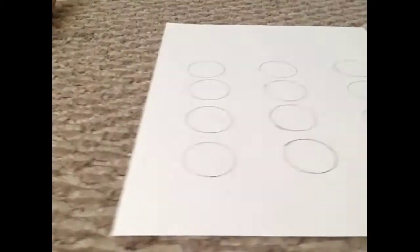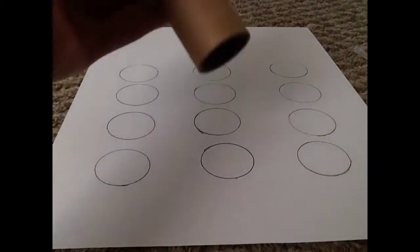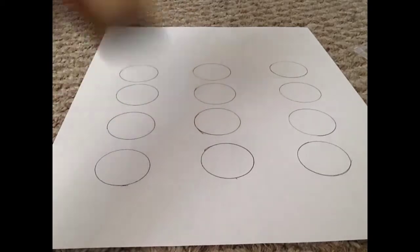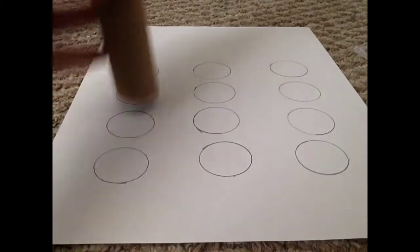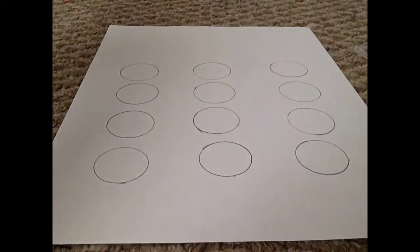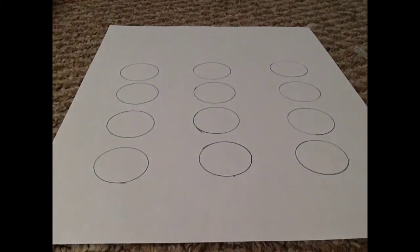So first you want to take the bottom of the roll and trace it on 12 times. Now you want to cut that out.